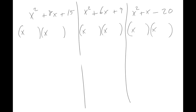For x squared plus 8x plus 15, look at the number 15. Tell me all numbers that multiply to equal 15: one times 15, or three times five. Which pair adds up to make eight? Three and five. So I put plus three and plus five — done.